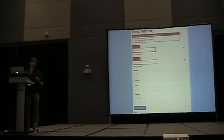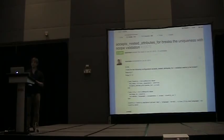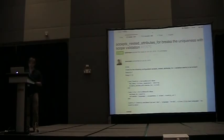If what you've seen so far for accepts_nested_attributes_for doesn't dissuade you from using them, you can go to the Rails GitHub and see that there are still open issues for accepts_nested_attributes_for. This one in particular — the uniqueness validation with scope — is just broken.